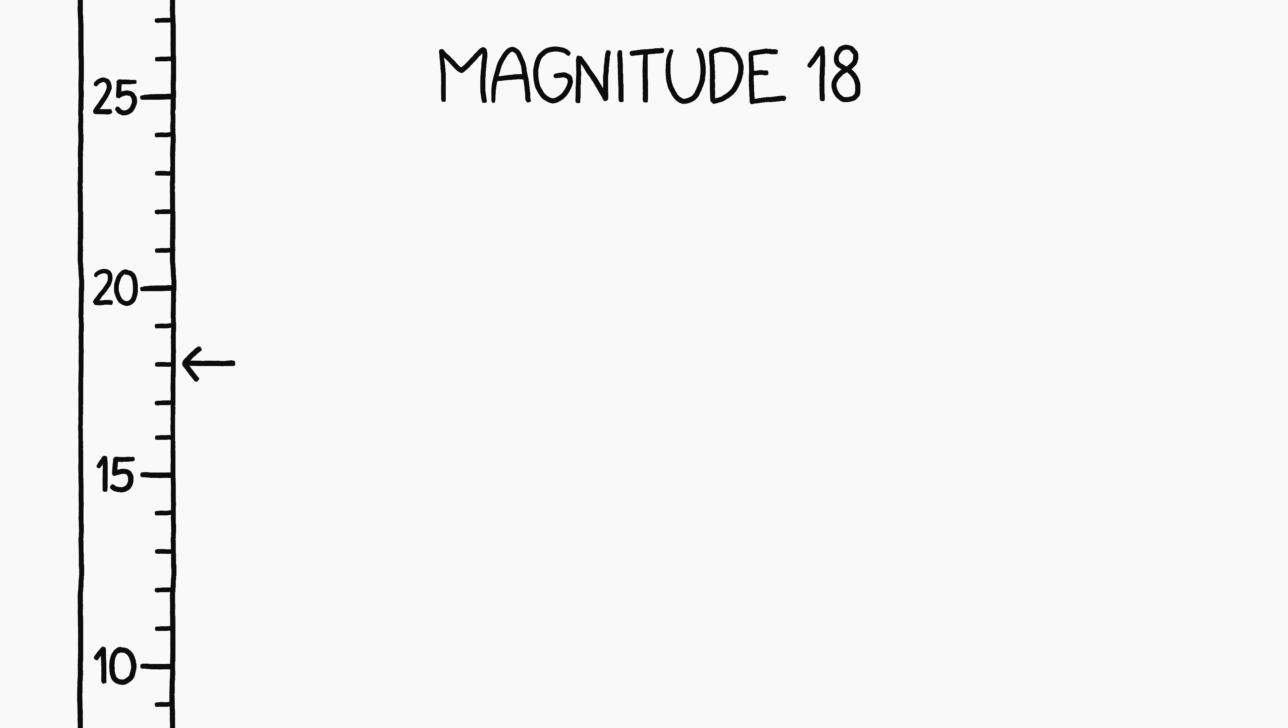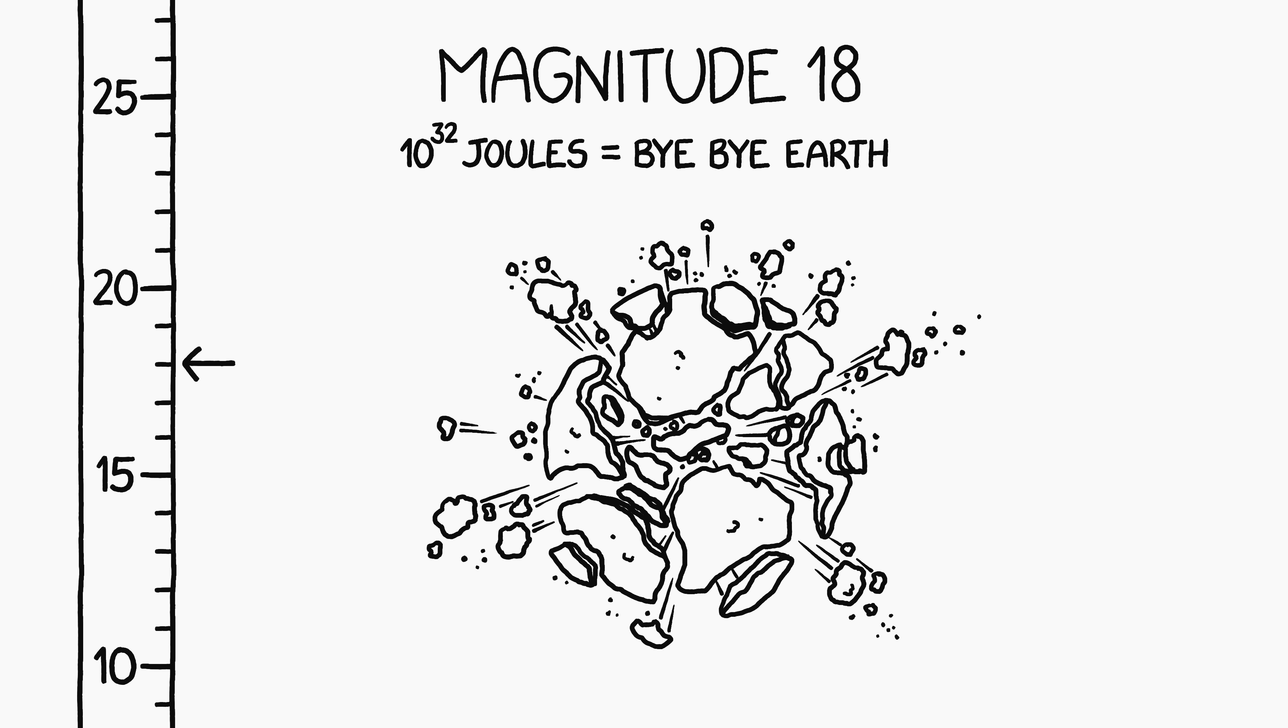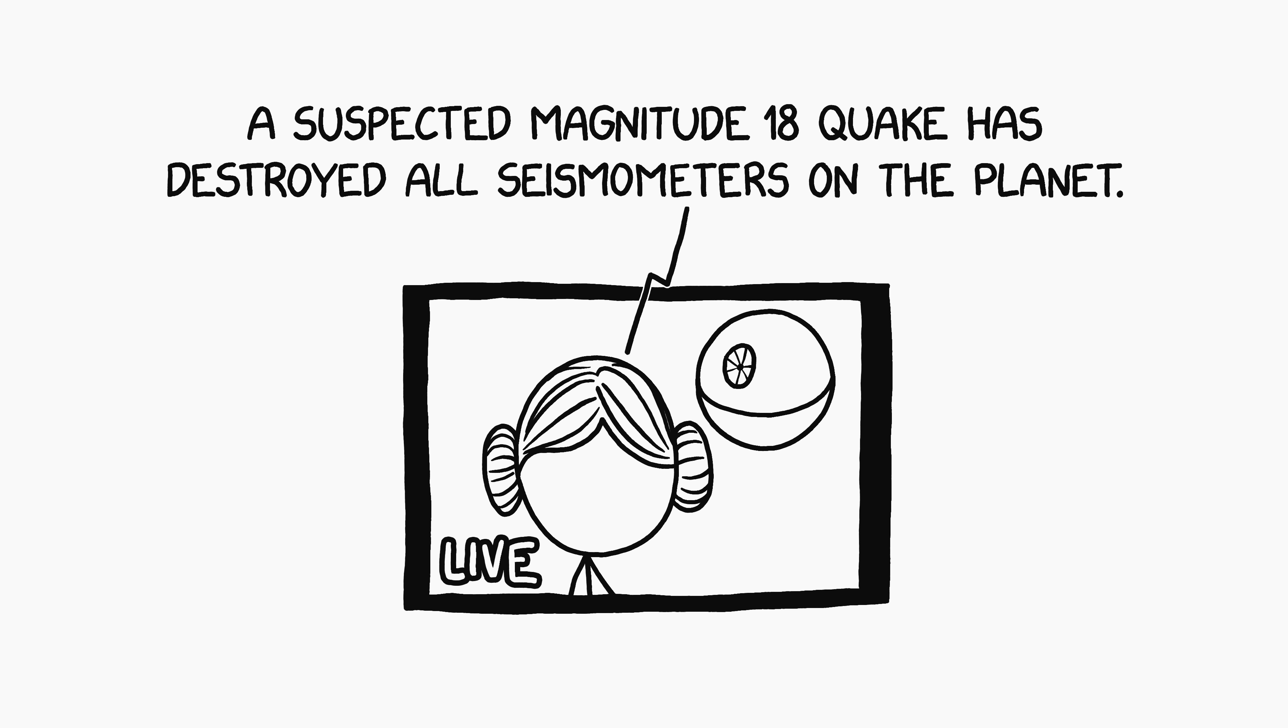Going a few steps further, a magnitude 18 earthquake would release nearly 10 to the 32 joules of energy, which is roughly the gravitational binding energy of the Earth. To put it another way, the Death Star caused a magnitude 18 earthquake on Alderaan.